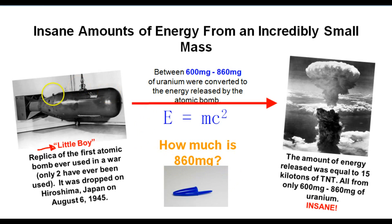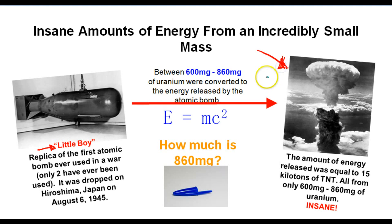The crazy thing about this is that Little Boy — this huge bomb — was just a delivery system for about 600 milligrams to 860 milligrams of uranium that were converted to the energy you see right here, the energy associated with an atomic bomb. So a very small amount of mass — 600 to 860 milligrams of uranium — was converted into a crazy, insane amount of energy.